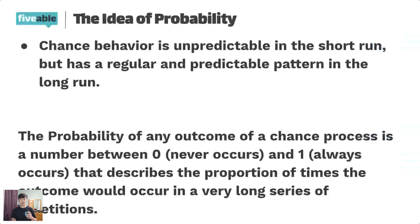The idea of probability: chance behavior in the short run, over a small number of trials, is not predictable. But if you increase the number of trials and observe a regular, repeating pattern, you can predict probability. This value is measured between zero and one — or 0% and 100% — where zero means the event never occurs and one means it always occurs. This is called the probability of success, describing the proportion of times an outcome occurs over a very long series of repetitions.